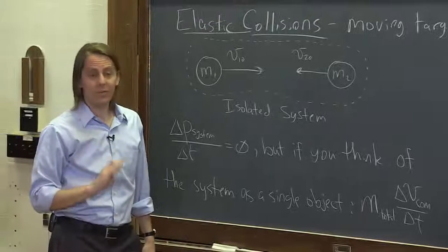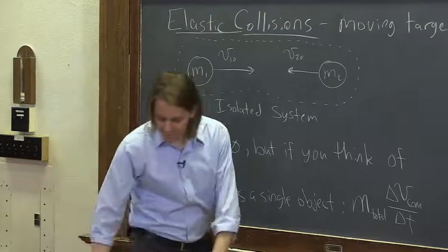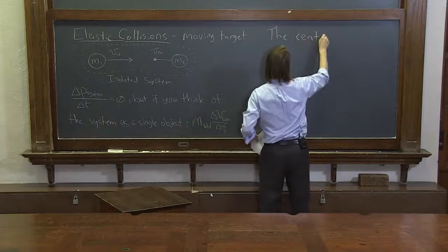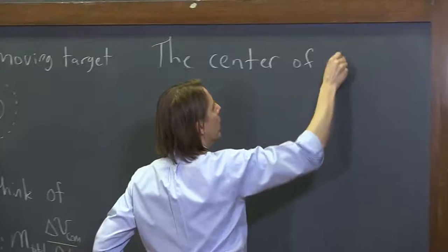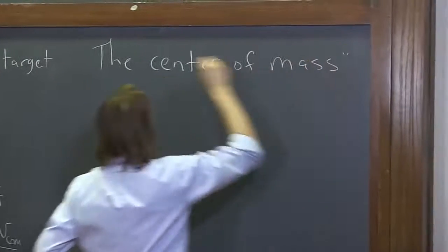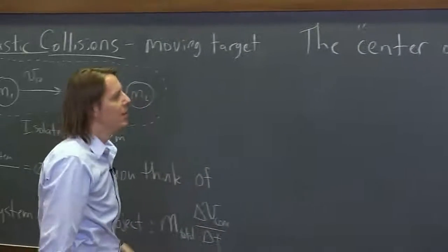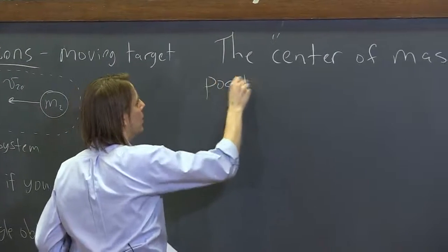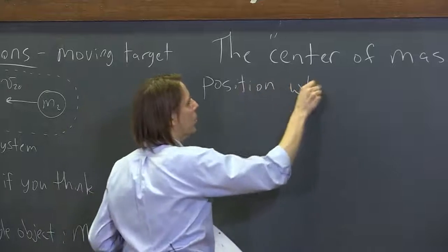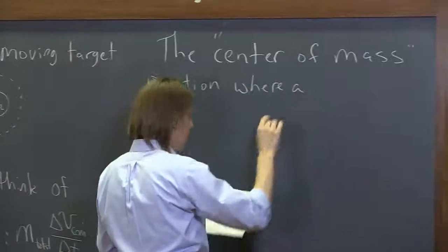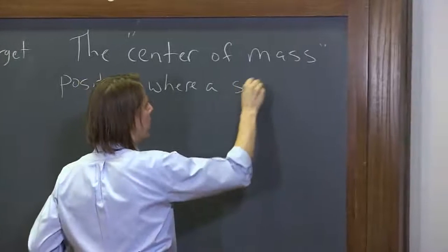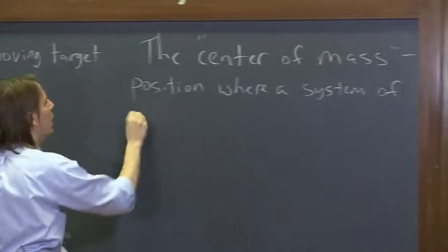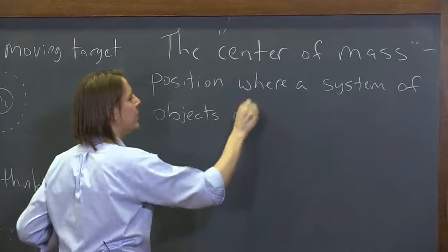So now let's define, talk about, the center of mass. So the center of mass, and that's what COM means. You'll see COM written a lot on subscripts on problems like this. It's the position where a system of objects acts like a single object.